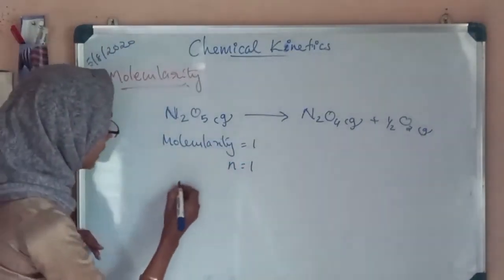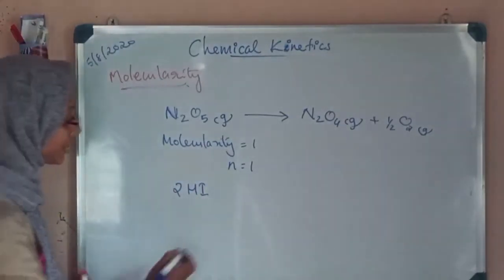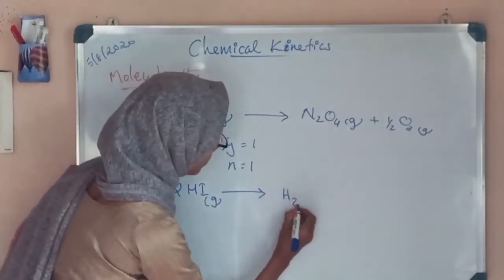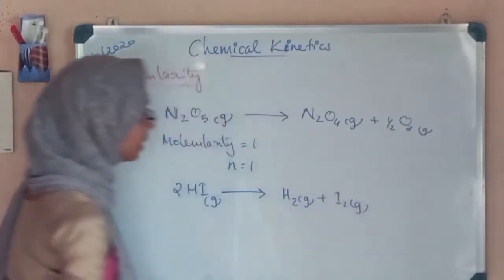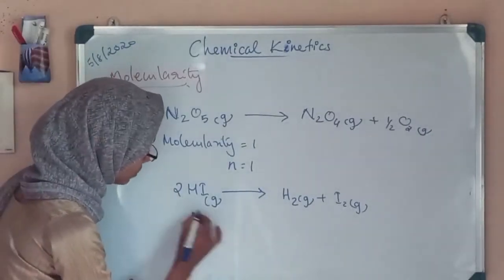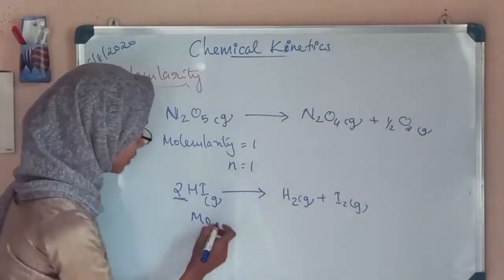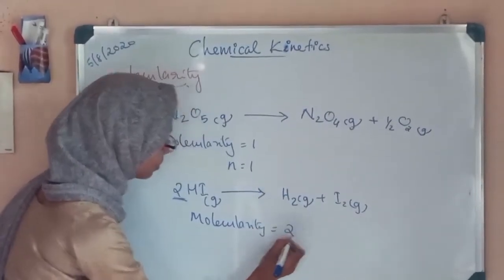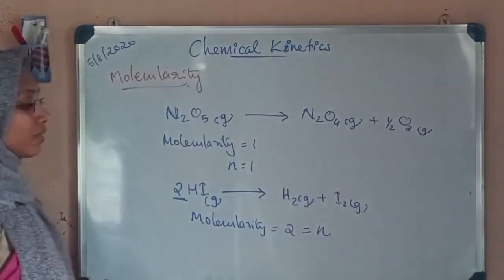Another reaction is the dissociation of hydrogen iodide in the gaseous state to give hydrogen molecule in the gaseous state and iodine, also in the gaseous state. It is also a simple reaction. Here the molecularity is equal to 2, that is 2 molecules of hydrogen iodide are involved in the reaction. Here also the order is equal to 2.